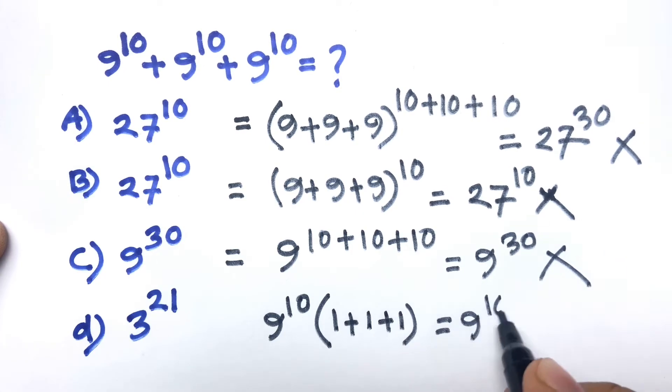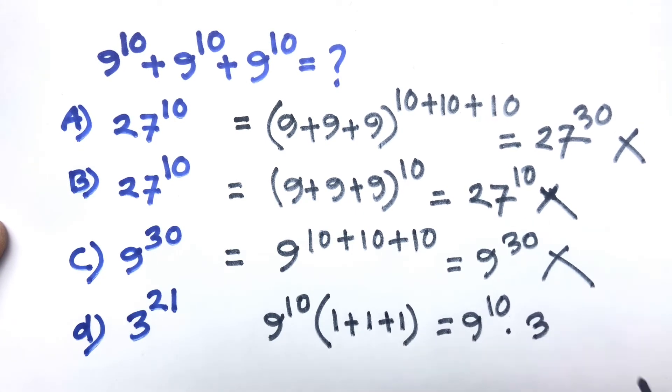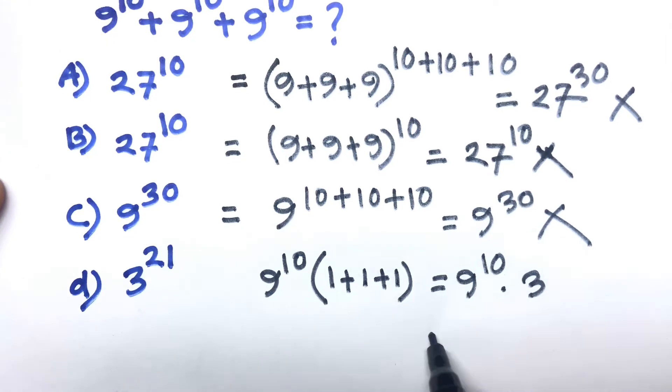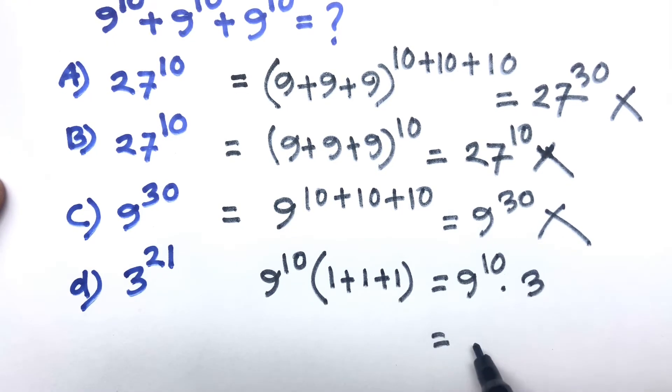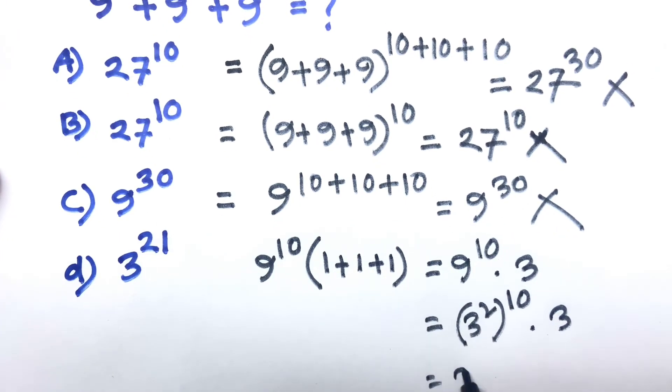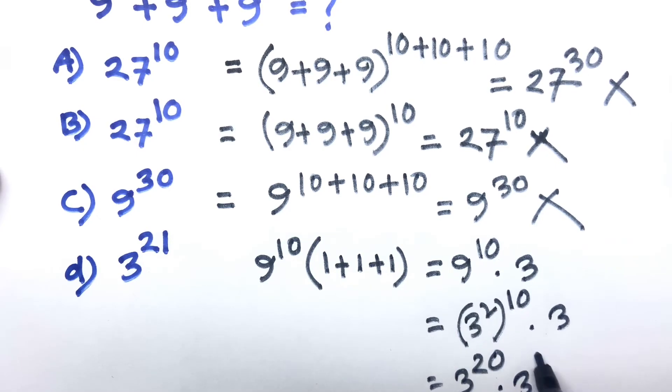You know that 9^10 equals 3^2 power 10 times 3. And now I can say 3 to the power 2 times 10 equals 20, times 3^1.